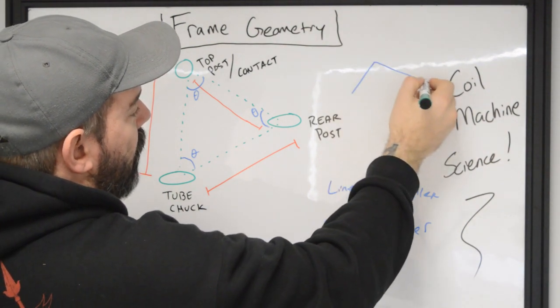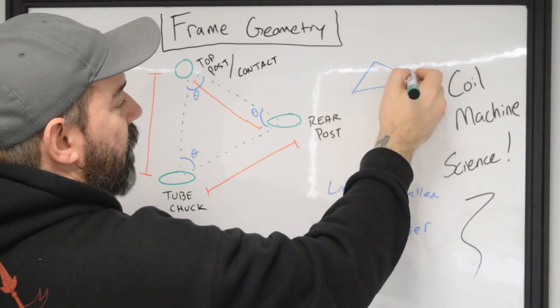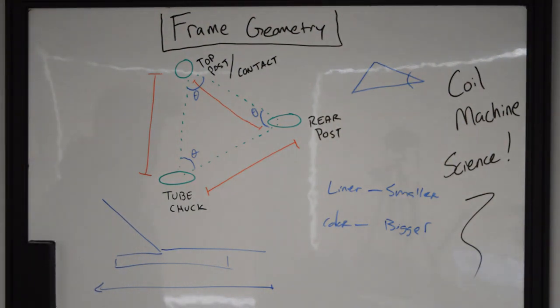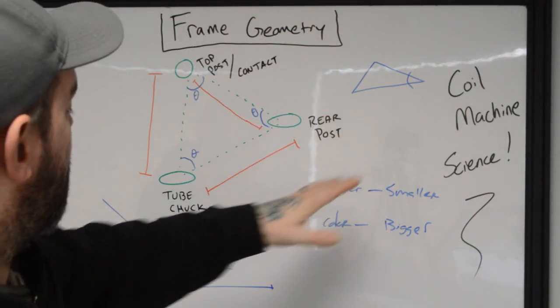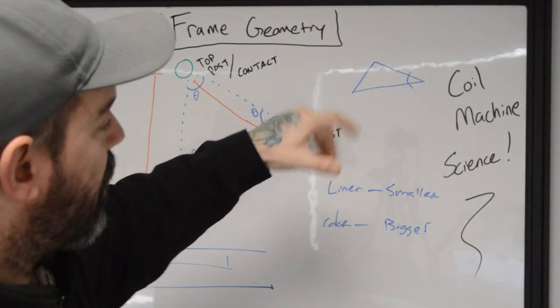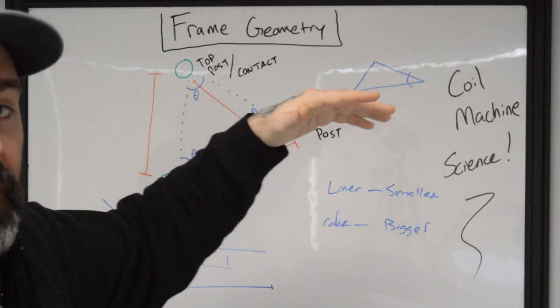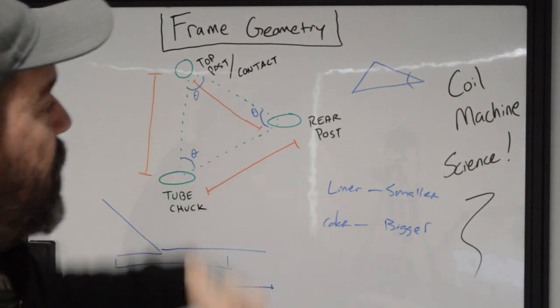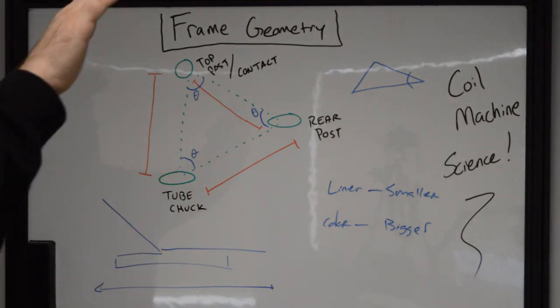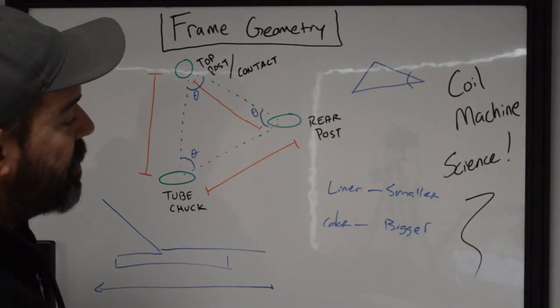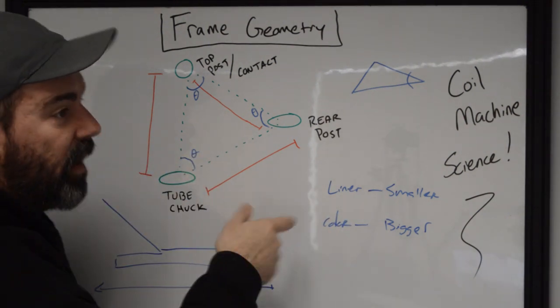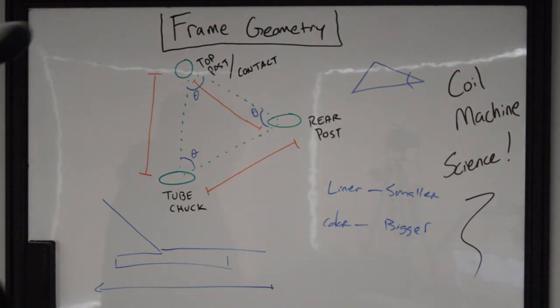If we have something with a really steep rear angle on it, the tighter and tighter and tighter that this gets, the more compact the coils are going to be, and usually the amount of energy that's actually going to be displaced on that machine is going to be a bit lower than we would actually want to see with something that's going to be like a liner. We're usually going to have a multi-use machine that's going to be color and liner, or just a color packer in general.